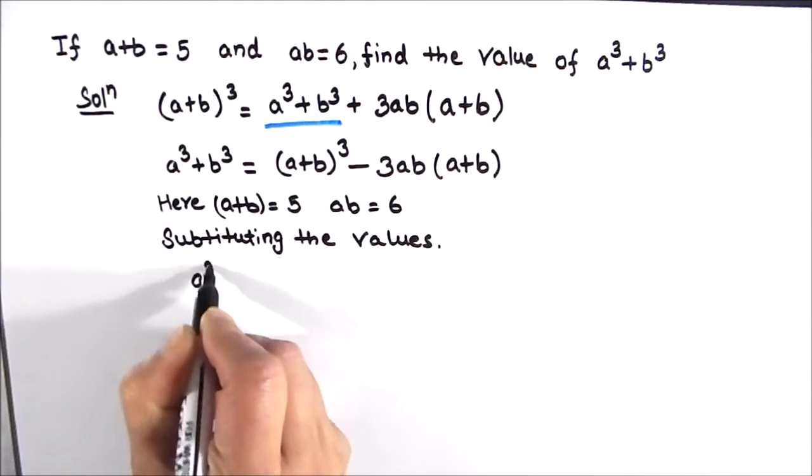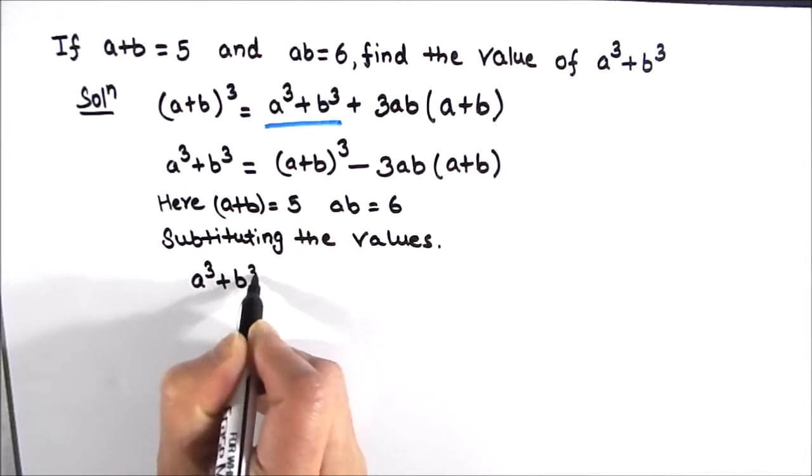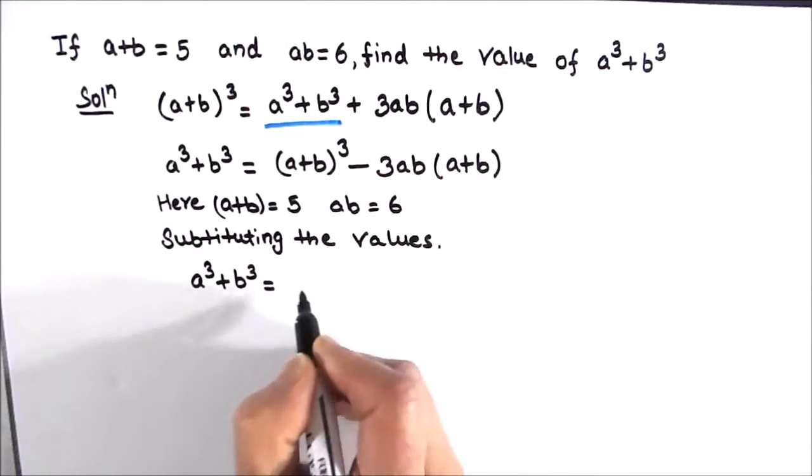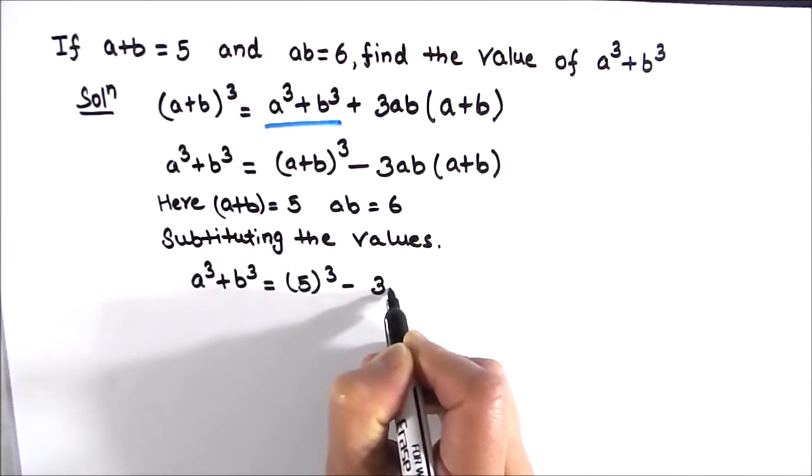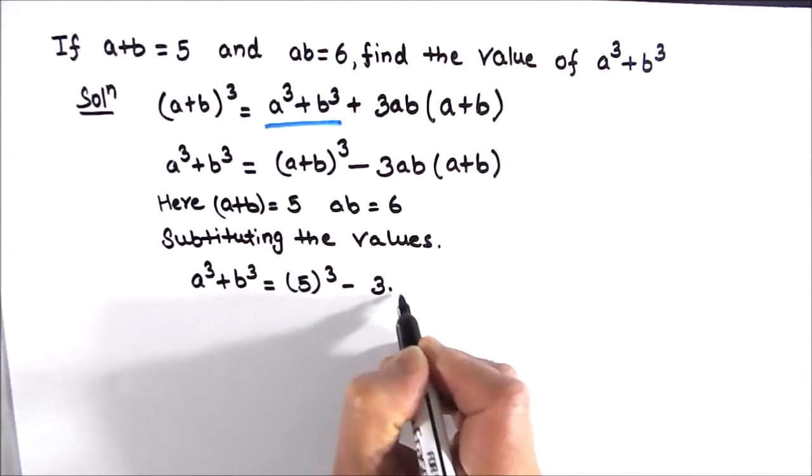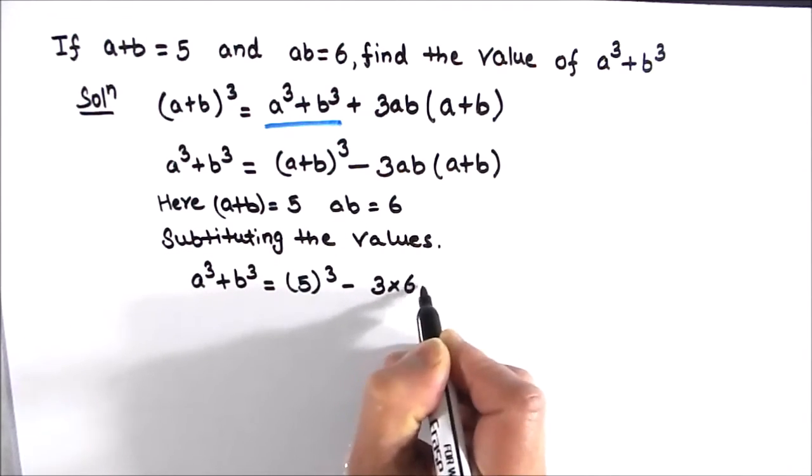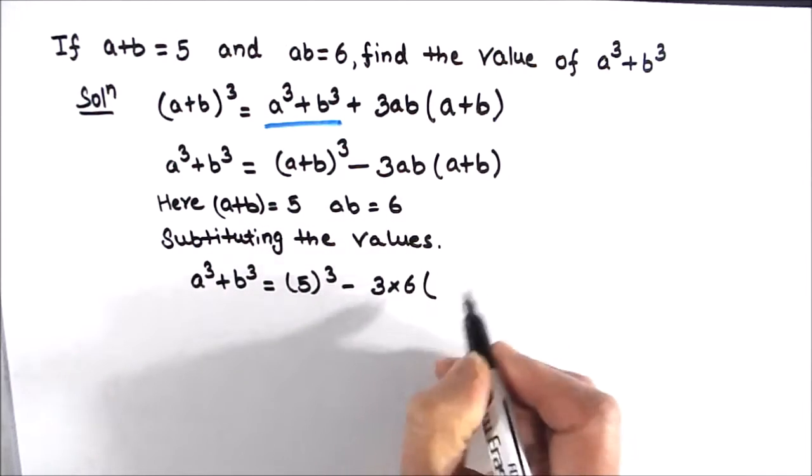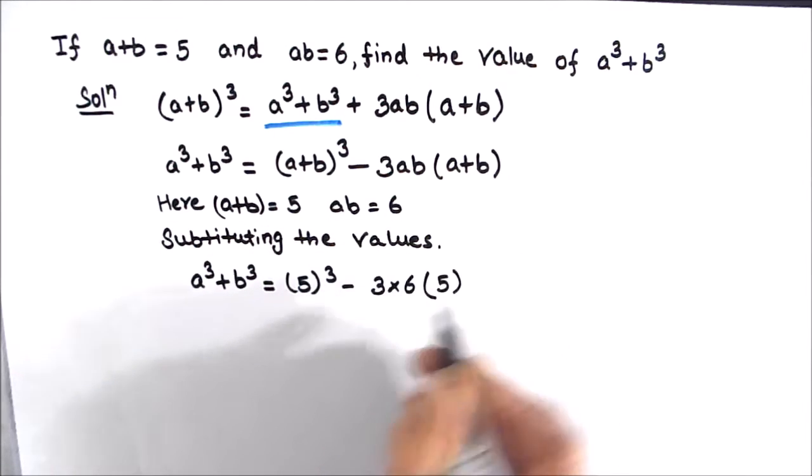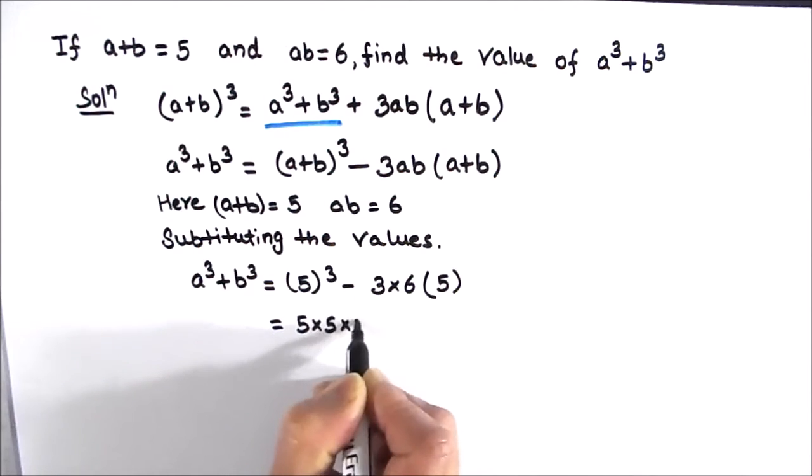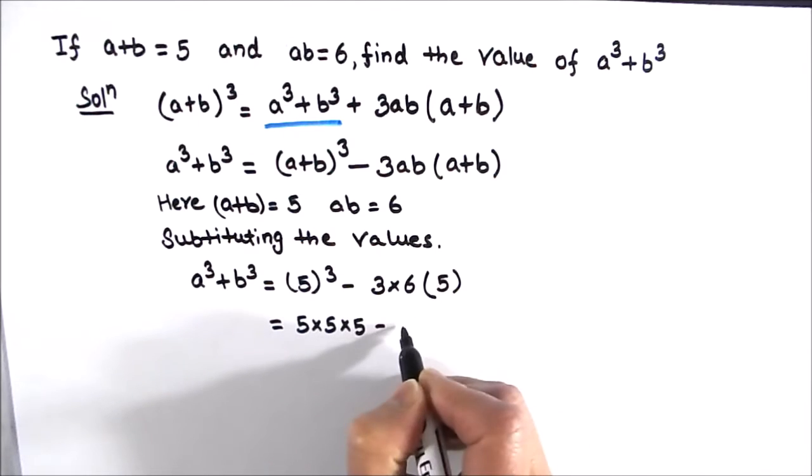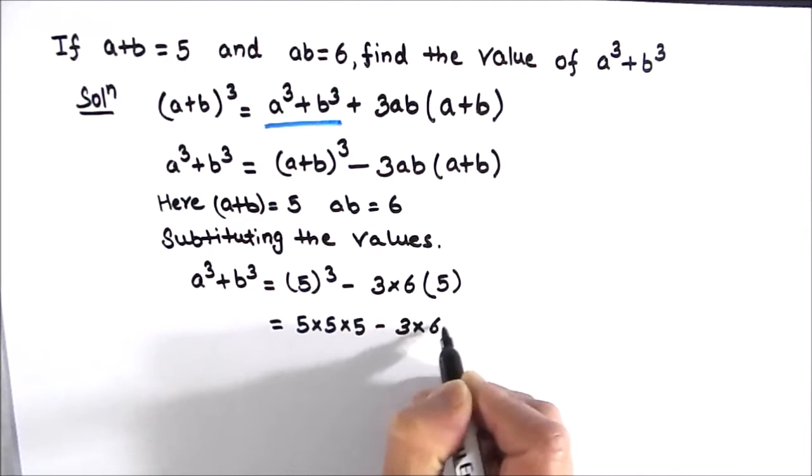So a cube plus b cube will be a plus b whole cube will be 5 cube minus 3 times ab is 6 times a plus b is 5 which is equal to 5 cube is 5 times 5 times 5 minus 3 times 6 times 5.